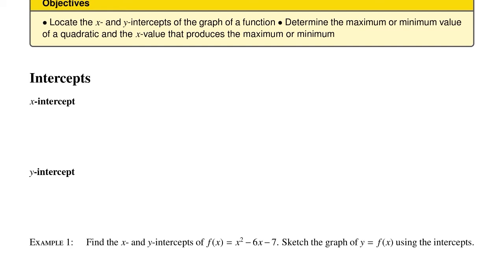Now, the easy way to remember which one is which is that the x-intercept corresponds to the x-axis, right? And so that means the y is equal to 0. And the y-intercept corresponds to the y-axis, which means that the x is equal to 0. So whichever intercept you want, you set the other variable equal to 0.